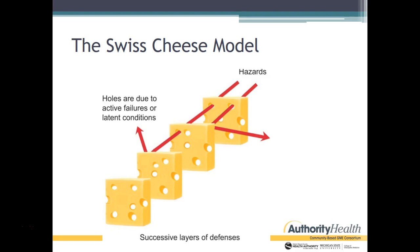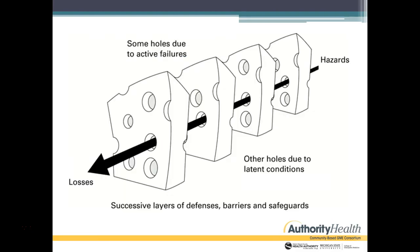With multiple layers of defense, typically hazards don't turn into an active adverse event. But here you can see one hazard that lines all the way up through all the Swiss cheese holes. Despite the successful layers of defenses, barriers, and safeguards that are put in place, something got through because there were latent conditions and then active failures.